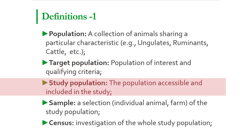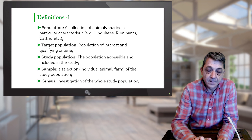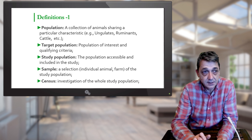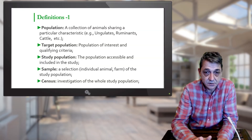Study population is the population actually included in or accessible to the study. We know from experience and everyday work that not all animals are always accessible to the study. Some lists of animals are not completed, some animals are missing, databases are not regularly updated, and there are missing whole herds and so on.